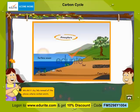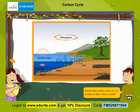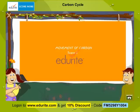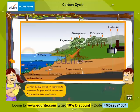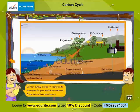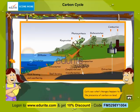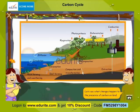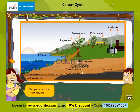We named all the places where carbon exists. But does carbon remain as it is in these, or does it move around? Carbon surely moves — it changes its direction, and gets added or removed from various substances. Let's see what changes happen to the presence of carbon on land. Let's watch what happens.